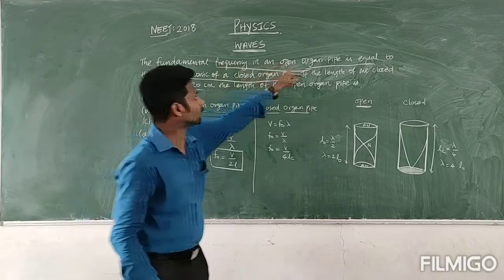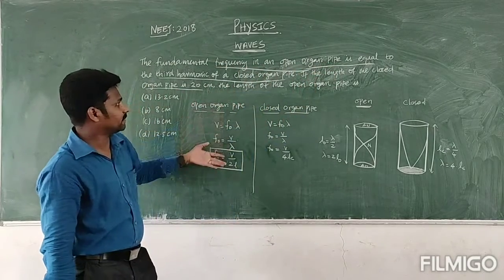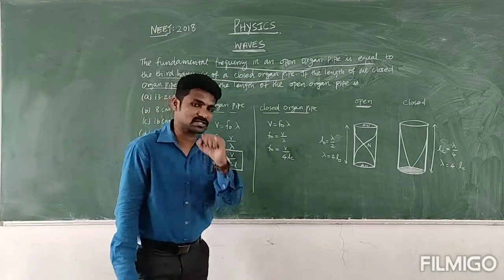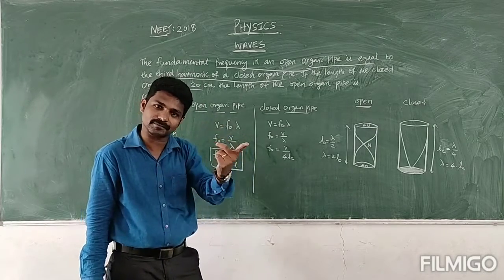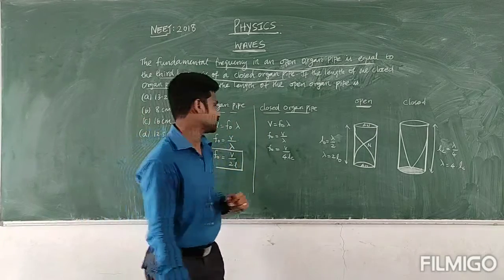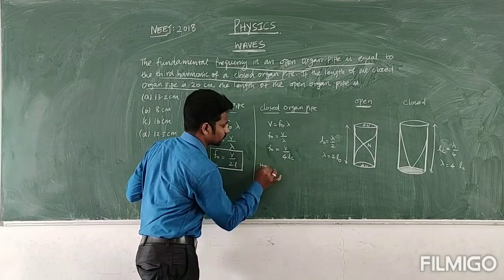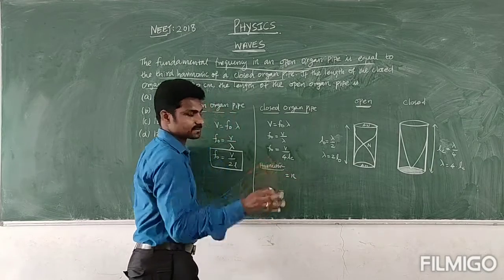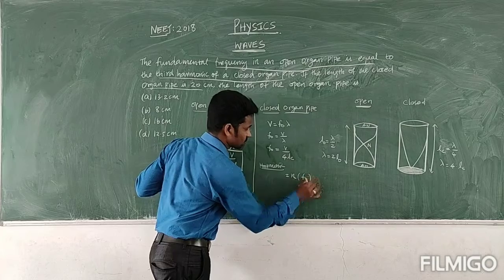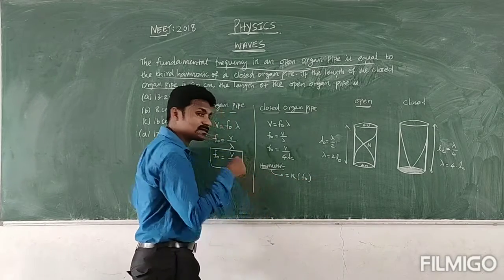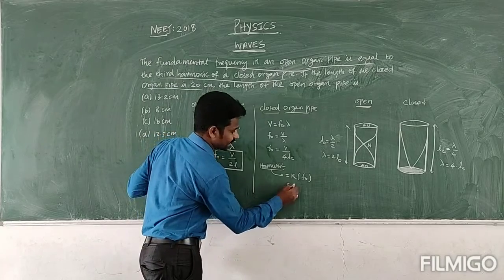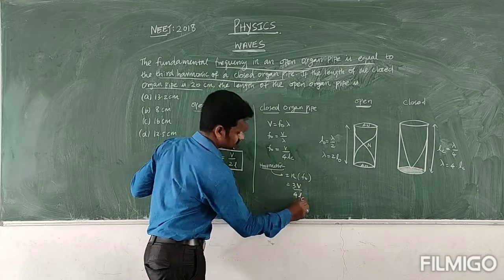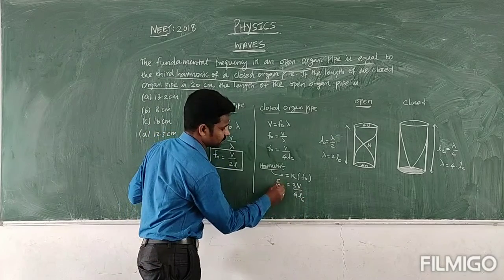Now, from the question: the fundamental frequency of the open organ pipe is equal to the third harmonic of the closed organ pipe. Harmonics are integral multiples of the fundamental frequency. The third harmonic is 3 times the fundamental frequency, which equals 3V divided by 4 times Lc. This is the frequency of the third harmonic.